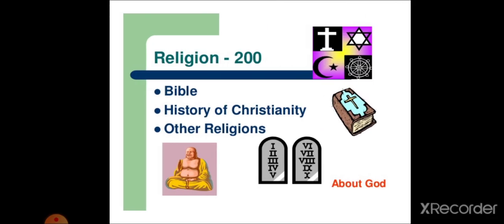About God comes under the category of religion. The number for which is 200. Bible, history of Christianity, other religions, all comes under this category.